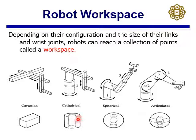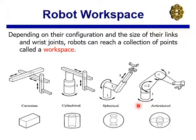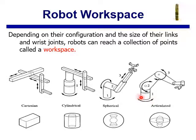For a spherical robot, the workspace or work envelope forms a sphere. It has a first revolute joint, a second revolute joint, and a linear joint acting as the radius arm. An articulated hand robot with three revolute joints also forms a spherical work envelope, with a first, second, and third revolute joint.